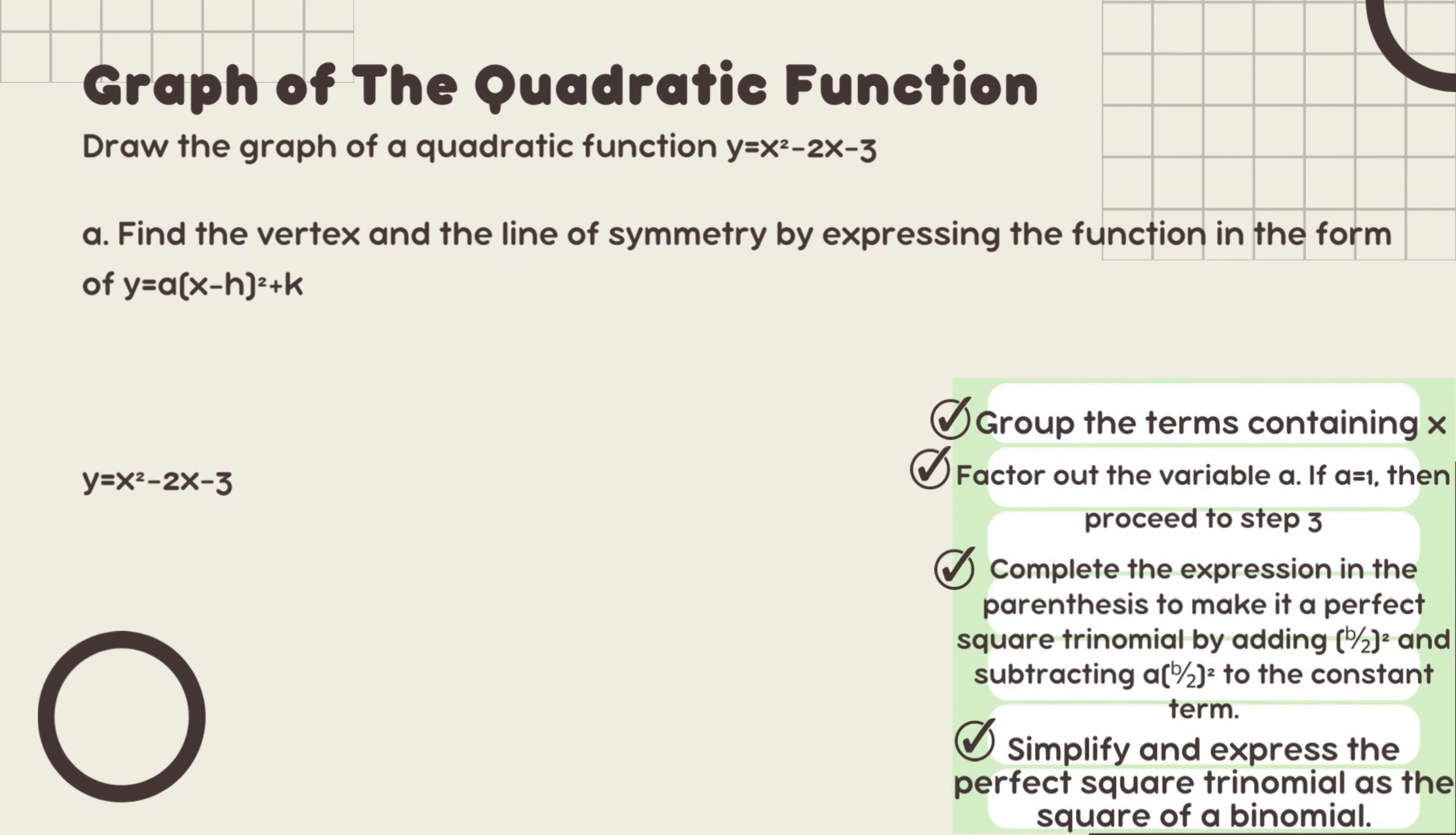Now step 1: y equals x squared minus 2x minus 3. Then moving on, y equals the quantity of x squared minus 2x minus 3. Since it says in step 1 to group the terms containing x, which is the x squared minus 2x.